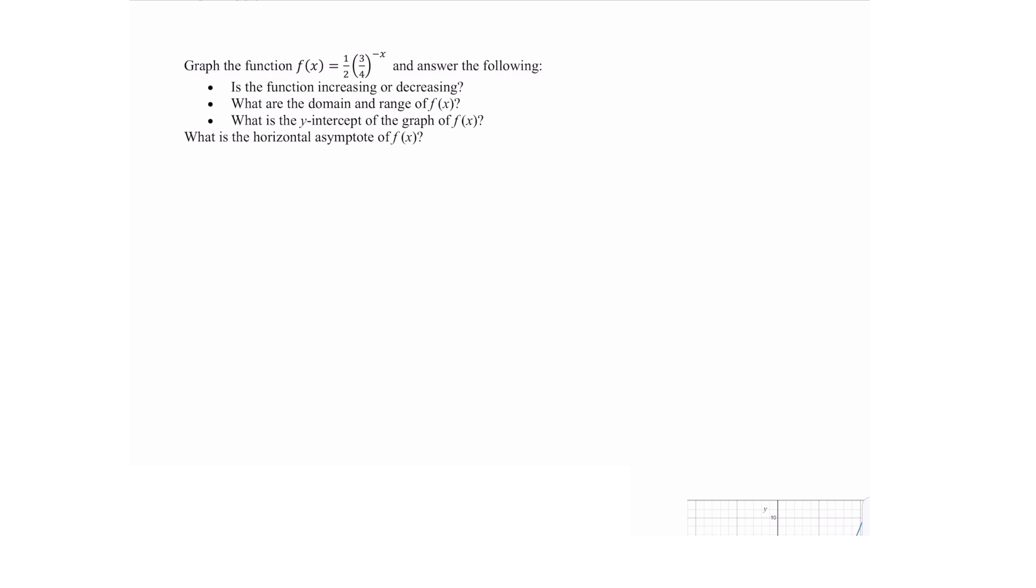Now when we start with our function f(x) equals one-half times three-fourths to the negative x power, one of the first things we want to do is rewrite that function in a times b to the x form and then look at our base there. So remember with the negative exponent that reciprocals the base. So I can rewrite this function as f(x) equals one-half and then reciprocal of three-fourths is four-thirds and then that takes the negative off the exponent. So those two functions are the same, they just have been rewritten.